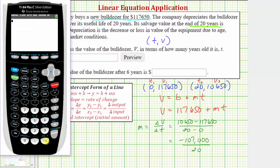Simplifying, so negative 107,000 divided by 20 is equal to negative 5,350.